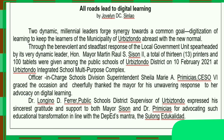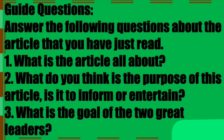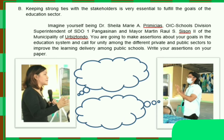You are going to answer the following questions based on the article that you have read. Number one: What is the article all about? Number two: What do you think is the purpose of this article? Number three: What is the goal of the two great leaders? For letter B: Keeping strong ties with the stakeholders is very essential to fulfill the goals of the education sector. Imagine yourself being Dr. Sheila Marie A. Primesias, OIC Schools Division Superintendent of SD01 Pangasinan, and Mayor Martin R. Ull S. Season II of the Municipality of Orbis Tondo. You are going to make assertions about your goals in the education system and call for unity among the different private and public sectors to improve the learning delivery among public schools. Write your assertions on your paper.